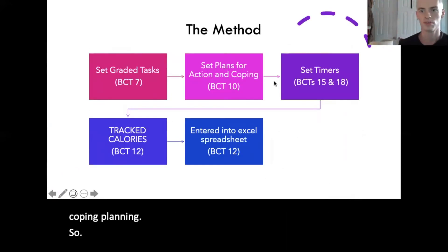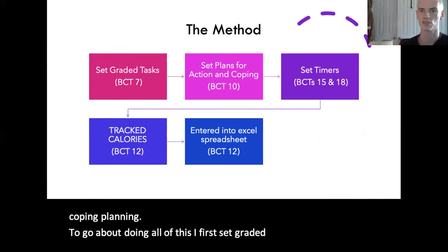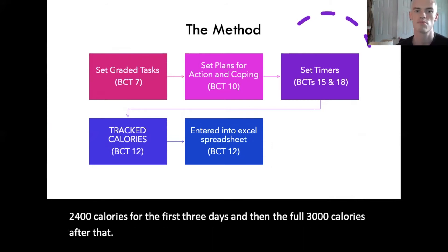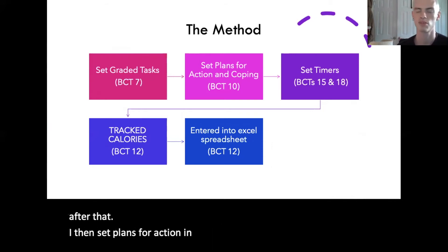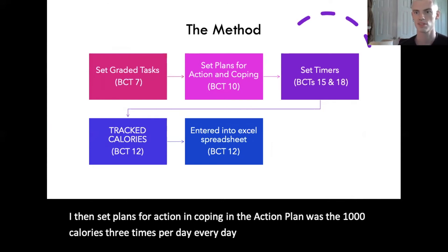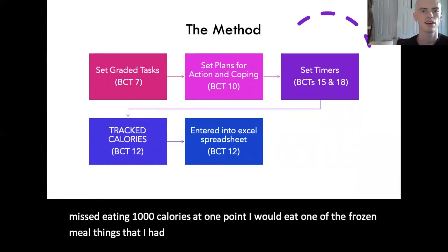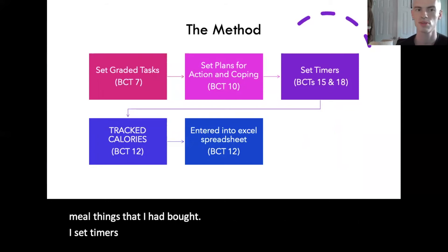To go about doing all of this, I first set graded tasks — 2400 calories for the first three days, and then the full 3000 calories after that. I then set plans for action and coping. The action plan was 1000 calories three times per day, every day. The coping plan was: if I missed eating 1000 calories at one point, I would eat one of the frozen meals I had bought. I also set timers and reminders on my phone as cues and prompts.